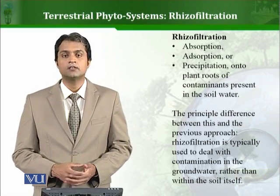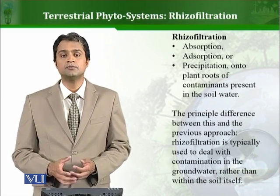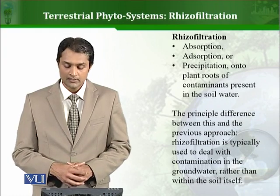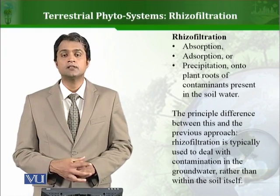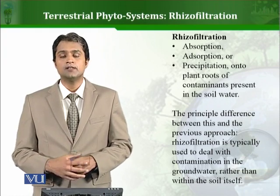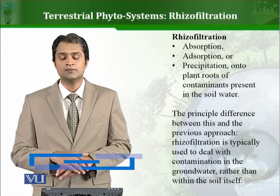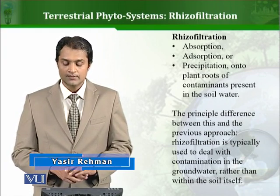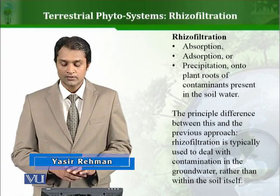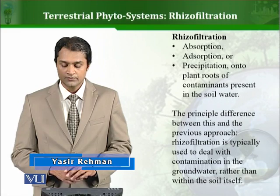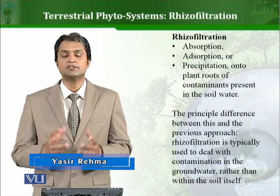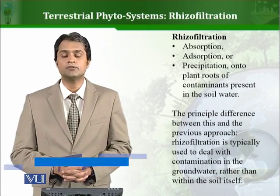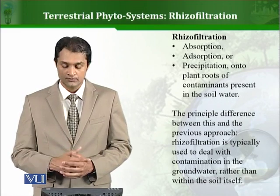For example, absorption by plant roots — the plant roots absorb heavy metals or toxic compounds. In absorption, the toxic compound is absorbed on the surface of the roots. Or precipitation — that is precipitation of contaminants present in the soil on the plant roots, which can also occur around the root zone.